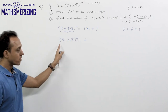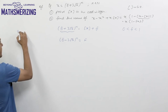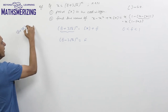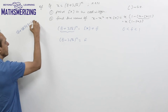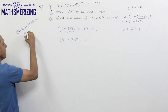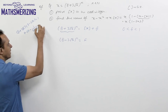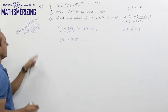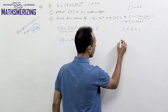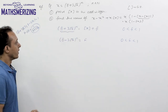We know that (8 + 3√7)(8 − 3√7) = 64 − 63 = 1, so (8 − 3√7) = 1/(8 + 3√7). This means (8 − 3√7) is less than 1, so we can confirm that capital F lies between 0 and 1.